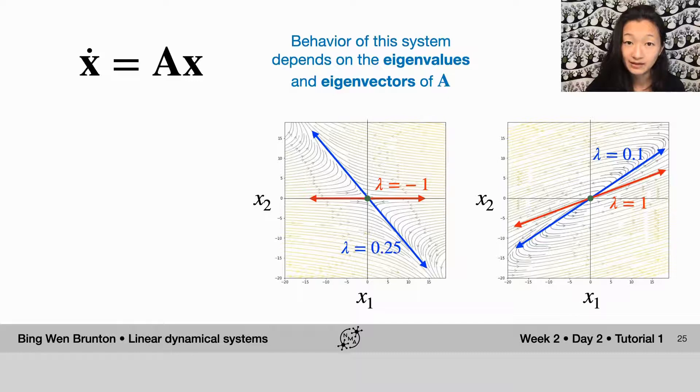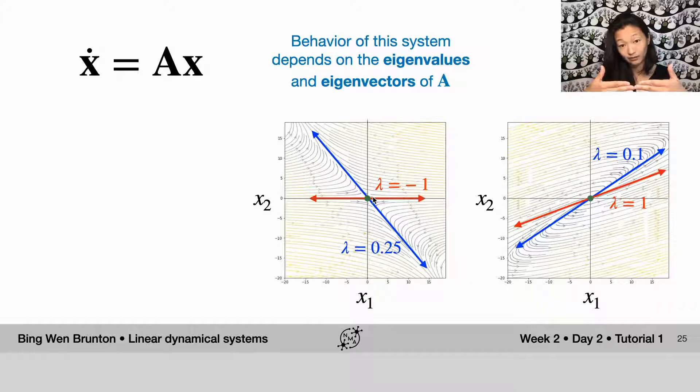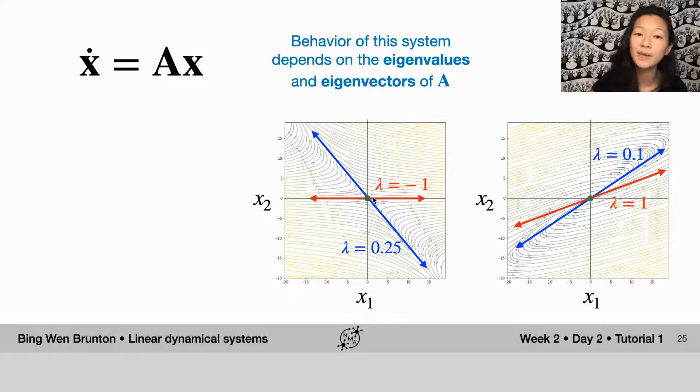If one of the eigenvalues is positive and the other one is not positive, it's negative, then we have something that's called a saddle. So if you follow the eigenvectors here, you can see that because this red eigenvector has a negative eigenvalue, things are contracting. This is an exponential decay. So things are decaying and going towards the origin along the red direction, but they're growing along the blue direction because that eigenvalue is 0.25. It's greater than zero. And it's called a saddle because it has the shape of kind of a saddle that you put on top of a horse to sit and ride the horse. And you can see that it's stable, decaying in one direction, but unstable and exponentially growing in the opposite direction.